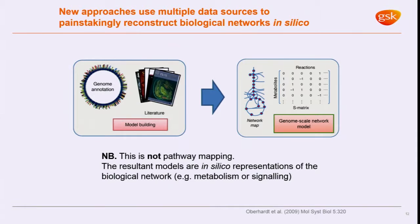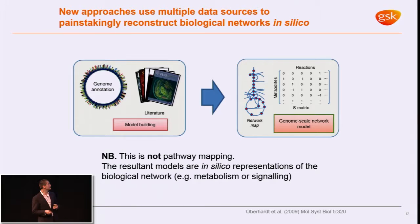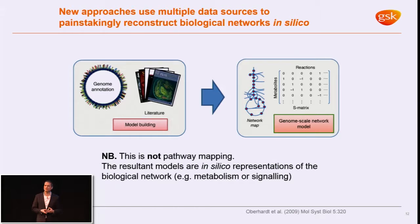Two or three quick slides to describe it — I'm not going to go into huge detail here, but you can come and find me later. Basically there are two steps. The first is the reconstruction of a network — effectively you're trying to get a parts list. There is a human metabolic network reconstruction. The first version, Recon 1, was published in PNAS in 2009, and Recon 2, the second revision, was published in Nature Biotechnology.